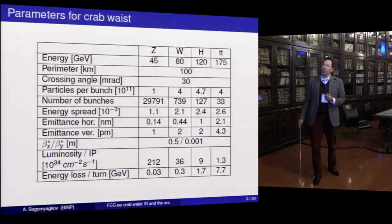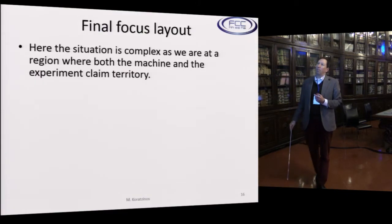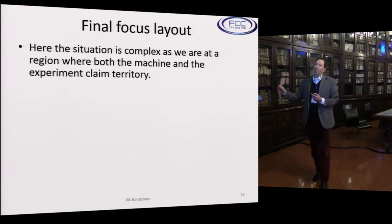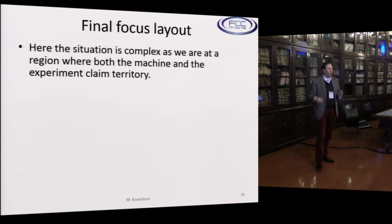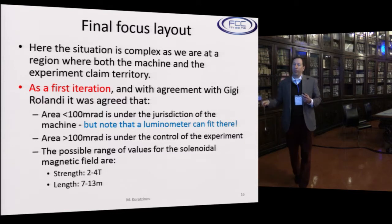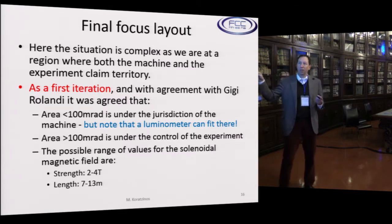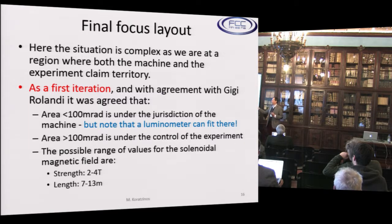These are the standard parameters used: one millimeter beta star Y. Here, the final focus layout — the situation is complex because there is an area where both the machine and the experiment claim territory. As a first iteration, we've agreed with Gigi that the region smaller than 100 millirad belongs to the machine — with a note that the luminometer might fit there — and the area greater than 100 millirad is under the control of the experiment. We've also put some range of values for the solenoid magnetic field: between 2 and 4 Tesla, and length between 7 and 13 meters. This is not the final word.